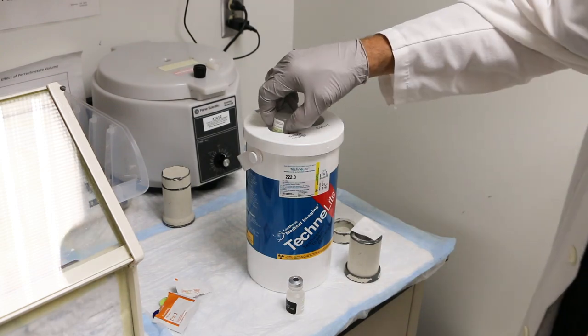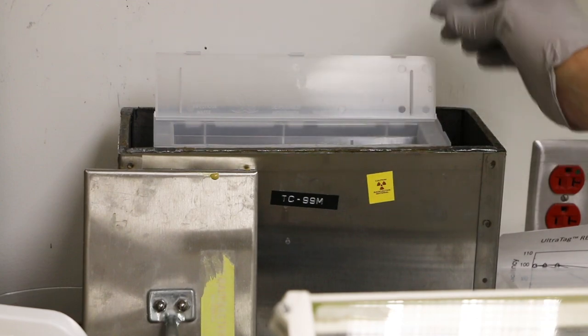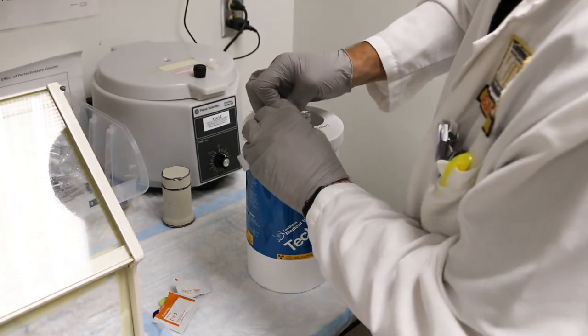Remove the old saline charge vial by pulling, not twisting, the vial and dispose of in the hot trash. Place the new saline charge vial on the generator by pressing directly down.